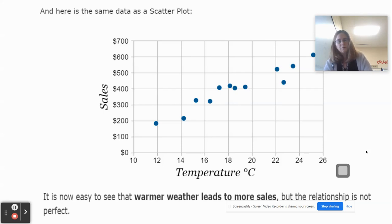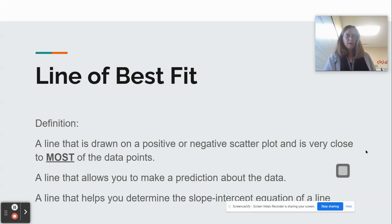And then we use it also to make predictions for future. So we know that the temperature is going to be approximately a certain amount. We can predict how much our sales are going to be for this ice cream business. And one way we do that is using a line of best fit. So I'll give you a definition of the line of best fit first.